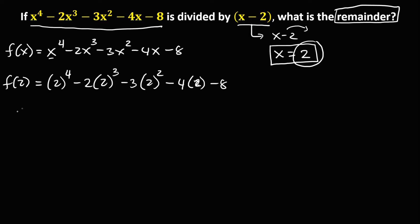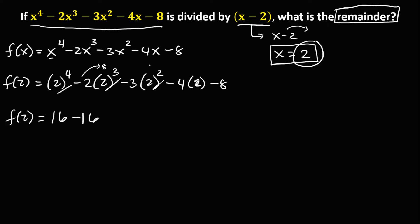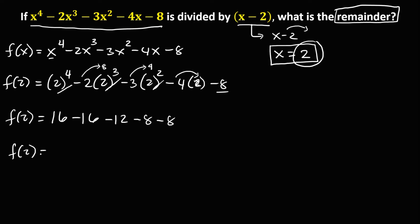To simplify, f of 2 equals: 2 to the power 4 is positive 16. 2 to the power 3 gives negative 16. 2 to the power 2 is 4, and negative 3 times 4 is negative 12. Negative 4 times 2 is negative 8.